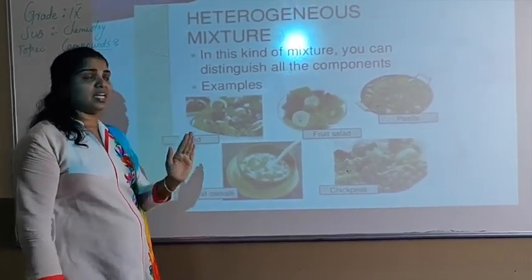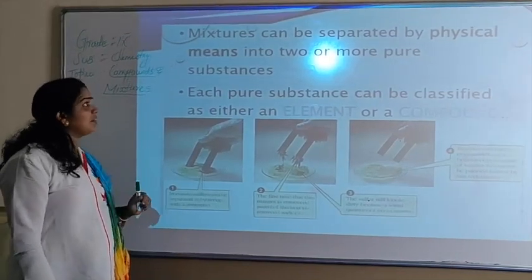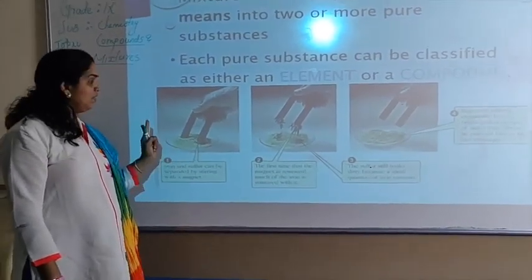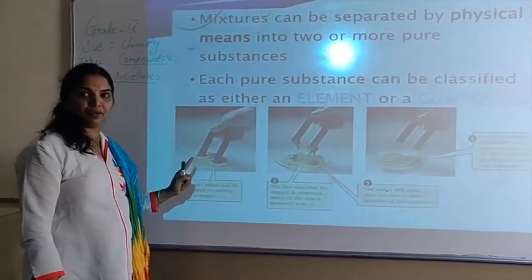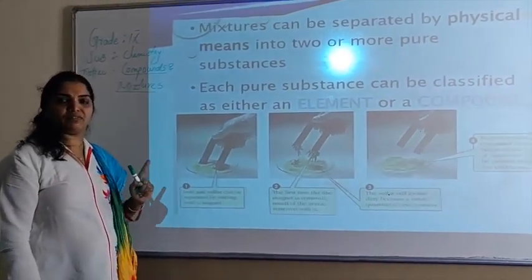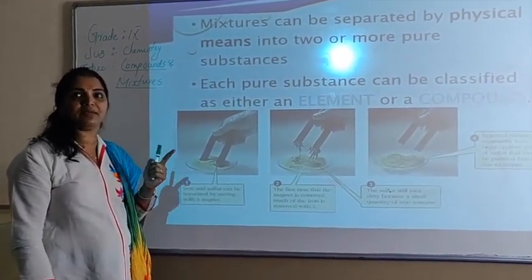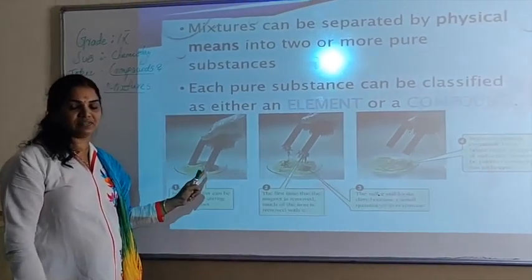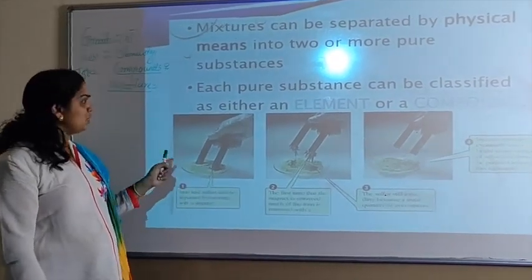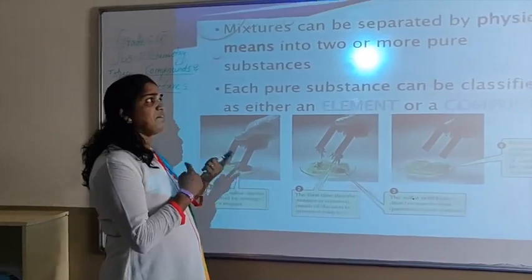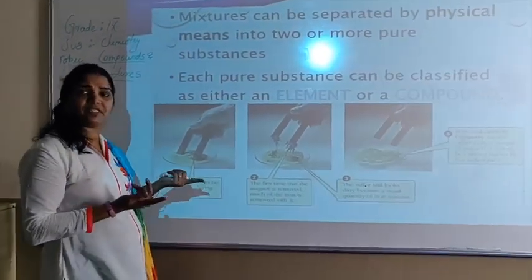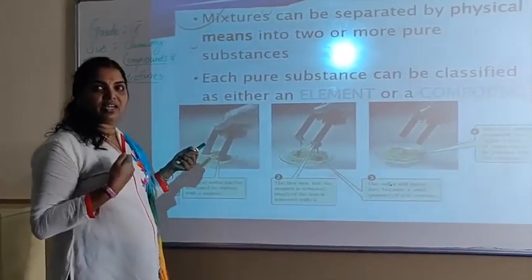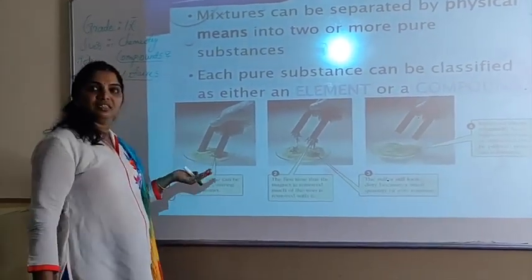Let us go through a chemical example. We are taking iron filings and sulfur powder and mixing them together — this is a heterogeneous mixture. Why? Because we can identify the separate substances: the iron powder is separately visible, as is the sulfur powder. We can also separate them physically using a magnet, which attracts the iron filings while the sulfur powder remains in the watch glass.